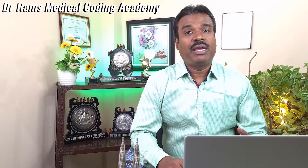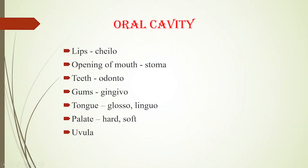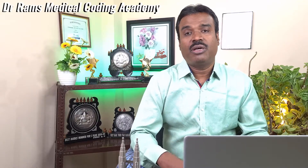If a patient presents with pain in the teeth we call it odontalgia. Inflammation of the gums is gingivitis. The tongue is called glosso or linguo, so inflammation of the tongue is glossitis. Next we have the palate, which separates the nasal cavity from the oral cavity. The hard palate is anterior, made up of palatine bones. Posteriorly it is the soft palate, made up of muscle. More posteriorly there is a teardrop-like projection called the uvula. Sometimes there is enlargement of the uvula and the surgeon performs a uvulectomy.